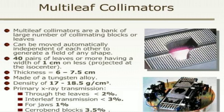Multi-leaf collimators are a bank of a large number of collimating blocks, 40 pairs in number, having a thickness of less than or equal to 1 cm, with a thickness of 6 to 7.5 cm, made up of tungsten alloy with a density of 17 to 18.5 grams per centimeter cube. Primary transmission of x-ray through the leaves is less than 2%, interleaf transmission less than 3%, for jaw it is 1%, and for Cerrobend blocks it is 3.5%.